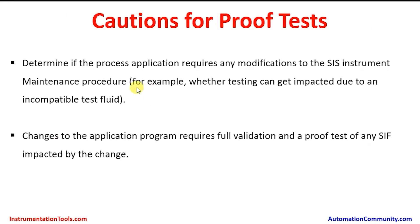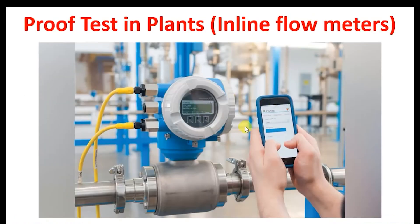Further cautions: determine if the process application requires any modification to the SIS instrument maintenance procedure — for example, whether the testing can be impacted by an incompatible test fluid. Normally, test fluids like nitrogen are used, and it must be ensured these do not get contaminated with the process fluid or gas. Changes to the application program require full validation and a proof test of any SIF impacted by the change. In this picture, an inline flow meter is being tested and adjusted for parameters and configuration.